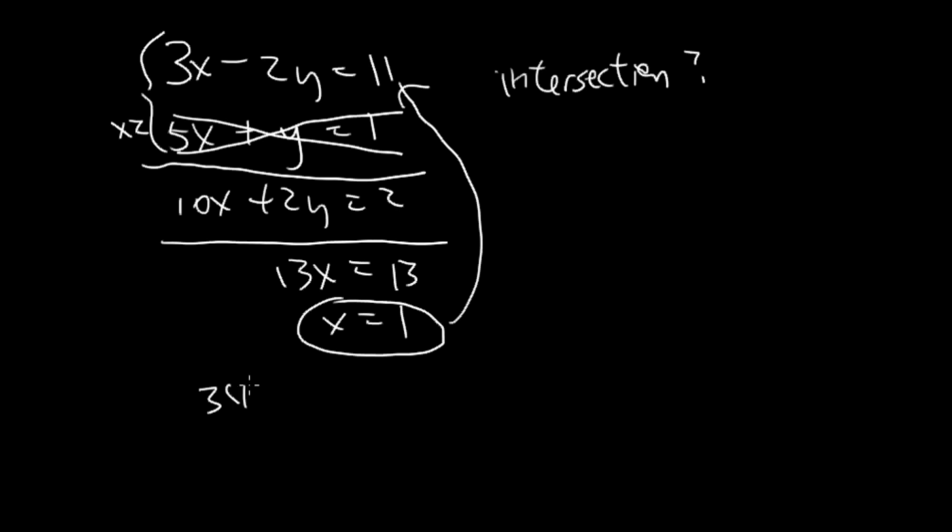3 times 1 minus 2y equals 11, so this is 3 minus 2y equals 11. Subtract the 3 over, so negative 2y equals 8 and y equals negative 4. Here's your final answer.